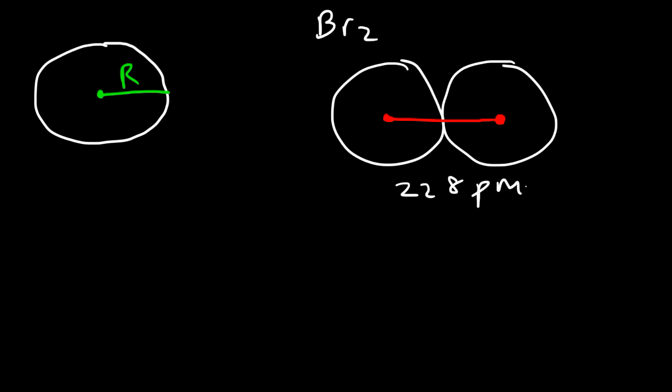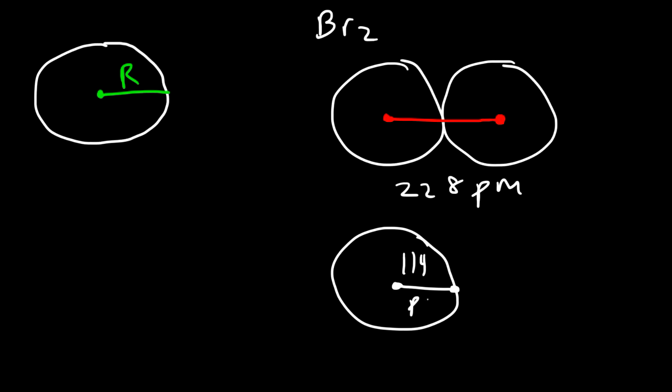So the atomic radius of one bromine atom is going to be half of that value, which is 114 picometers. That's how the atomic radius of elements are calculated — if you know the distance between the two nuclei of a molecule, you simply take half of that distance and you have the radius of the atom.